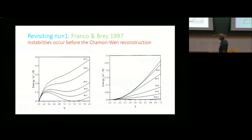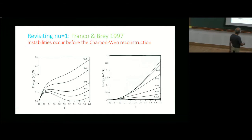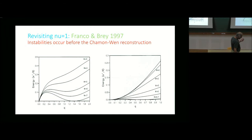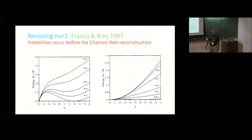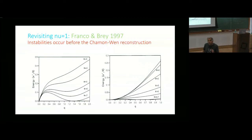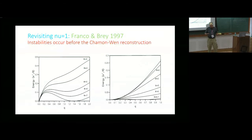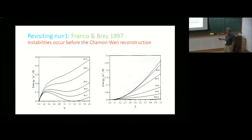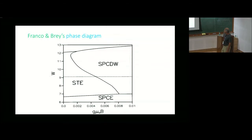Knowing the translational symmetry is going to be broken, Franco and Bray looked for translational symmetry-broken ground states — a hard calculation, but they did it. So as W increases to somewhere between six and seven, both the charge density excitation and the spin wave excitation go below zero, indicating an instability of the compact edge.